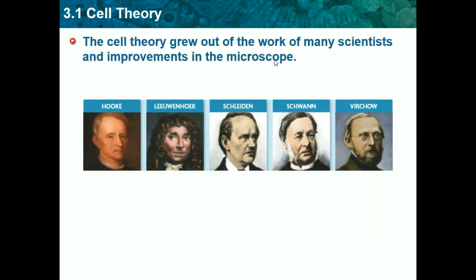The cell theory grew out of the work of many scientists and improvements in the microscope. A theory can be improved over time and it explains something — the cell theory explains all about cells. It's not a law because it doesn't predict anything, and a theory will never become a law. The cell theory will always be a theory and will always be improved as our technology improves.